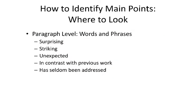So those are the document-level places to look. If you're skimming a paper, you want to look at: the title, the abstract, the keywords, the very beginning and very end of the introduction, the beginning of the discussion, and the visuals — the tables and figures — to quickly get an idea about what the main points of the paper are.